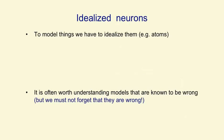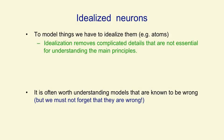In order to understand anything complicated, we have to idealize it. That is, we have to make simplifications that allow us to get a handle on how it might work. With atoms, for example, we simplify them as behaving like little solar systems. Idealization removes the complicated details that are not essential for understanding the main principles.